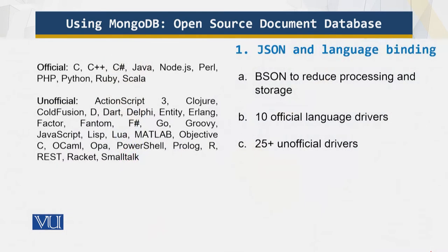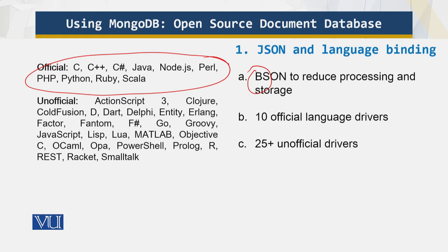JSON is JavaScript Object Notation, a standard format for exchanging data. Its binary version, BSON (Binary JSON), is supported by MongoDB because it reduces processing time and improves performance. At the time of recording, about 10 languages are officially supported by MongoDB, and more than 25 to 30 languages are unofficially supported, which is another reason for MongoDB's popularity.